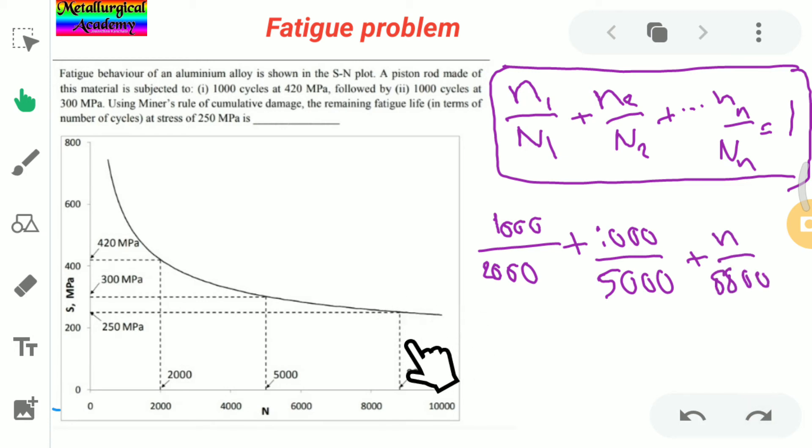At 250 MPa, 8800 cycles we are getting equal to 1. For solving this equation we need to get n2 at 250 MPa is equal to 2640 cycles.